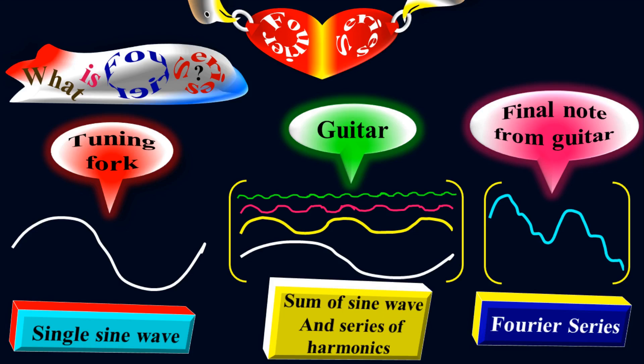Most music equipment creates sound as a sum of sine waves and series of harmonics. So the final waveforms created from those sounds are in Fourier series form.